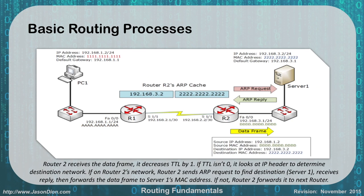Router two then receives that information. It looks at the IP address and realizes that it does own the 192.168.3.x network, which is where we're trying to get the information to — the server. So it sends out an ARP request to find out who owns the IP address 192.168.3.2, which responds back with the MAC address for that server. Once the router has that MAC address, it can use the switch network to get the information to the server.